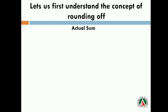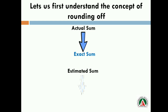Let us first understand the concept of rounding off. Before going deep, first we have to understand two terminologies, two main things about this concept. First is actual sum. What is actual sum? And the other term is estimated sum. What is estimated sum? Actual sum is exact sum, exact quantity. And estimated sum is a guess or a judgment. An estimated sum might be slightly less or slightly more, but actual sum is always the exact sum.